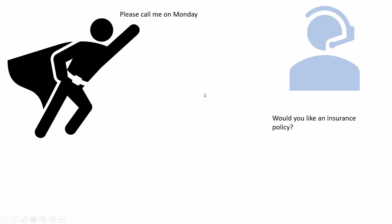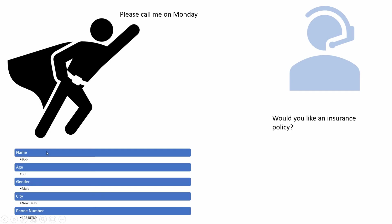Now there are certain things about Bob that I would want to capture, like his name, his gender, his age, location, and other details — basically all the information that will come in handy if and when Bob decides to buy the policy. I will store his information together in a table named customer.